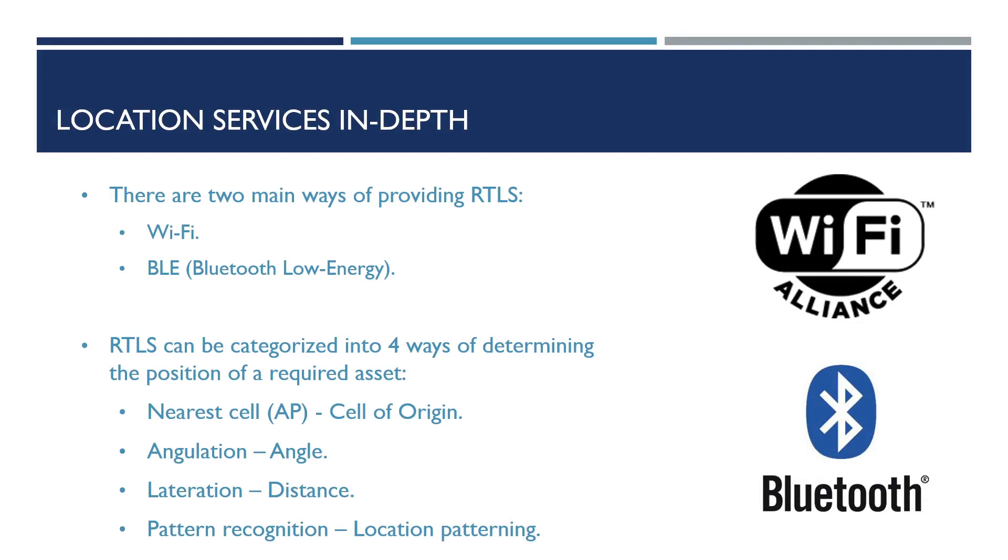So there are two ways that we can provide real-time location services. These are via Wi-Fi or BLE also known as Bluetooth low energy. Both of these are built into all new APs provided by Cisco.